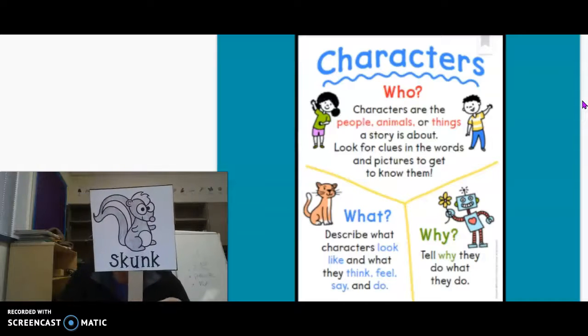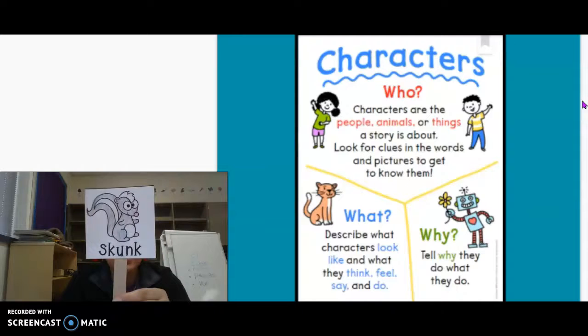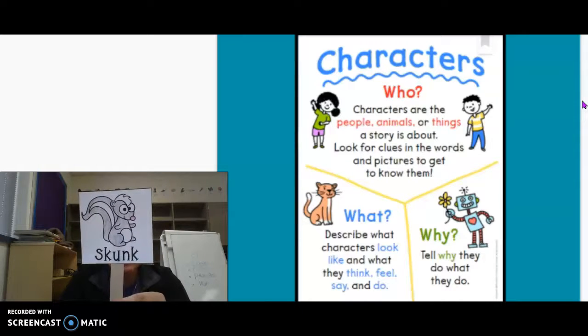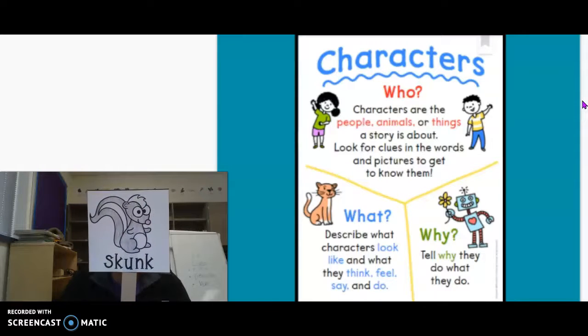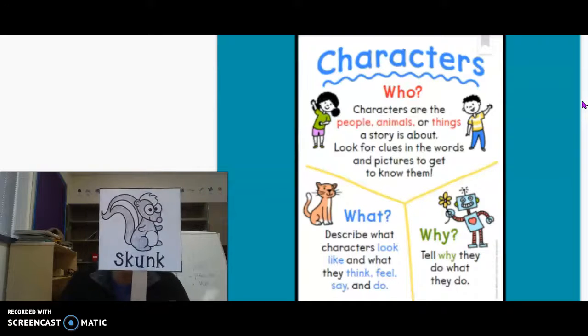Skunk keeps getting upset. Why? The vegetables that skunk is planting keep disappearing, right? So skunk is just acting the way he does because he's upset that his vegetables keep disappearing.